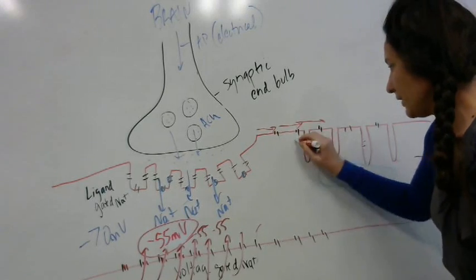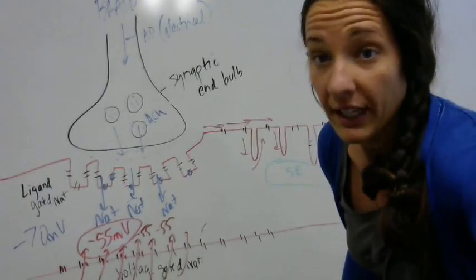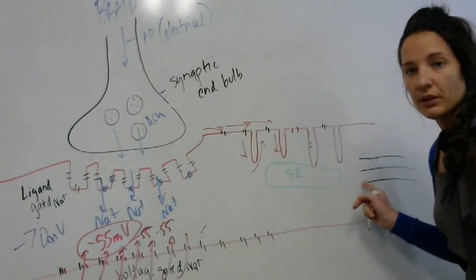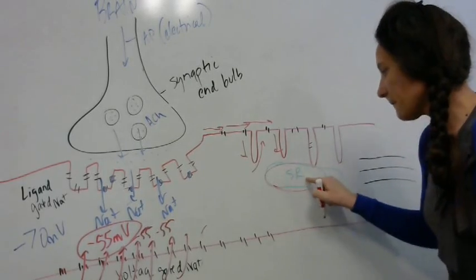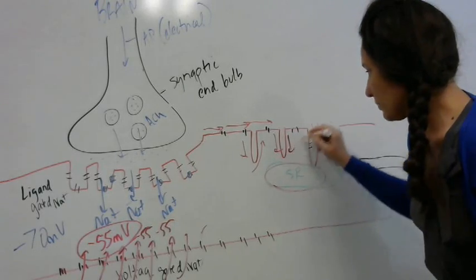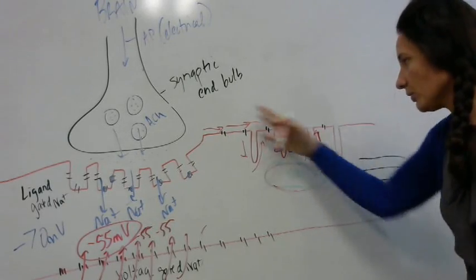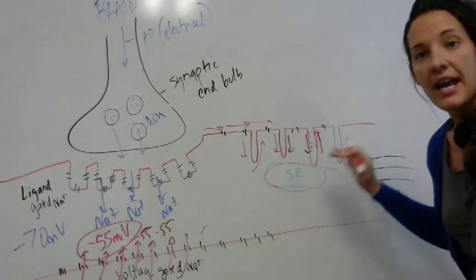You end up forming an action potential down the t-tubules. What I'm going to end up formulating is the ability of my SR, you can see it's very lightly shown in green here, to release calcium. I've spread this potential down through my t-tubules along the muscle cell by voltage-gated channels. I electrify that SR, and SR then begins to release calcium.